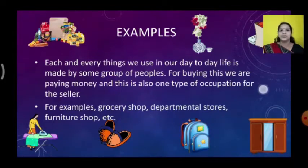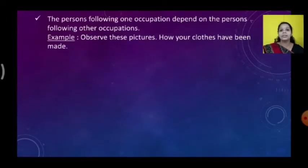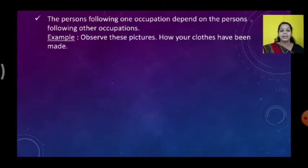So behind one type of product, so many people are working. The persons following one occupation depend on the persons following another occupation. Now observe this picture — we are going to see how our clothes have been made.